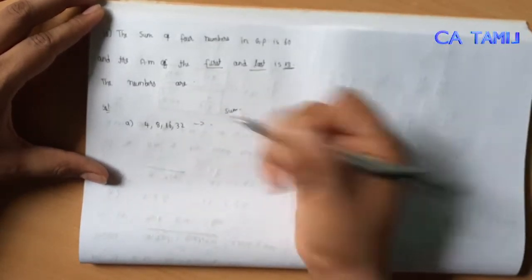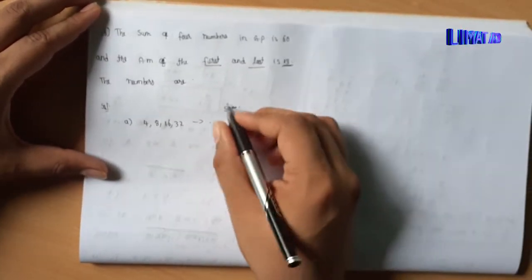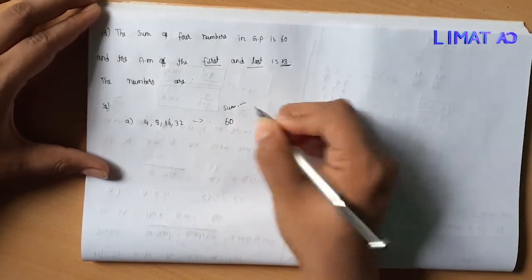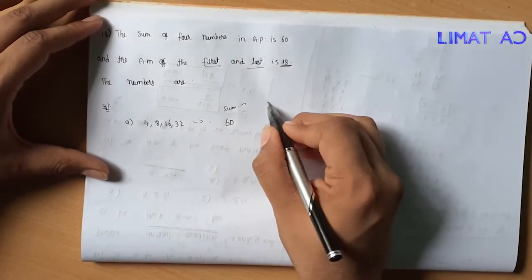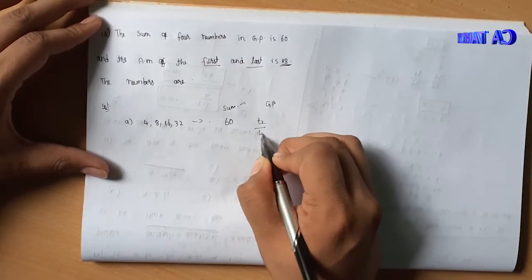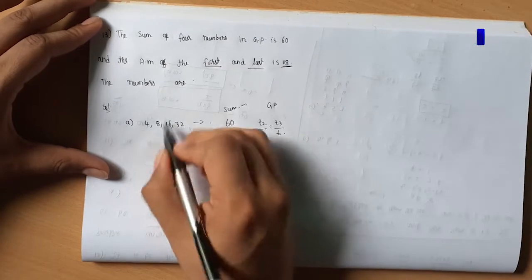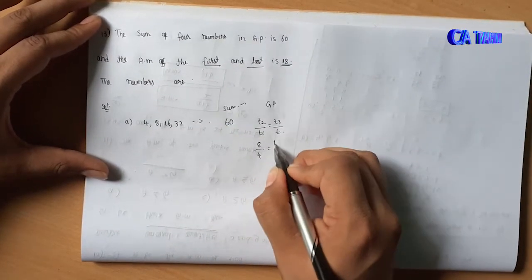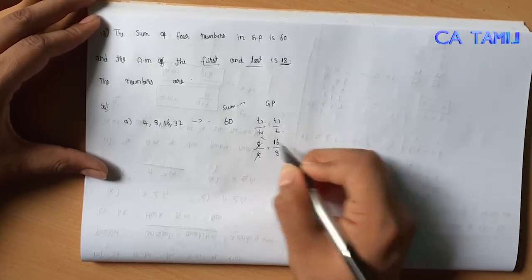Checking: 4 plus 8 plus 16 plus 32 equals 60. To verify GP: term2 divided by term1 equals 8 divided by 4 equals 2, and term3 divided by term2 equals 16 divided by 8 equals 2. The ratio is 2.